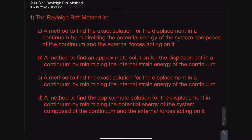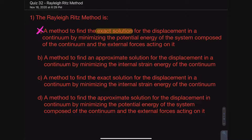Question number one is basically just completing the statement: 'The Rayleigh-Ritz method is...' with four different options. Option A says a method to find the exact solution for the displacement in a continuum by minimizing the potential energy of the system. This is definitely incorrect because the Rayleigh-Ritz method is used to find an approximate solution — not the exact solution. Sometimes the approximate solution will be the exact solution, but saying we're always finding the exact solution is incorrect.